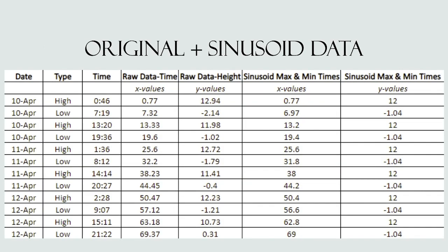Here is a list of our original plus our sinusoid data. We have the dates, the type of tide, at what time they occurred within the 72-hour window, and specifically at what times. The raw data is shown in the height column, alongside the sinusoid x and y values.